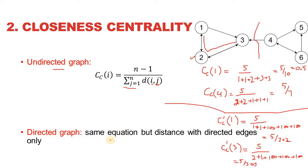Finally, let's calculate closeness centrality for node 5 in the directed graph. Node 5 has no outgoing paths to any other node in the graph, so all five other nodes are unreachable. This gives us 5 divided by 500.